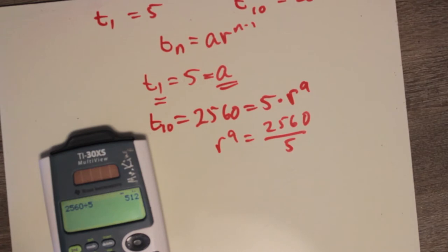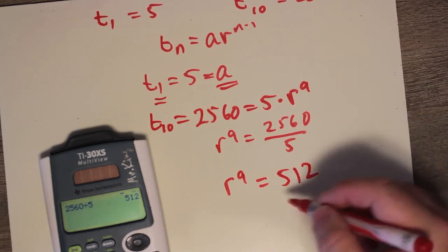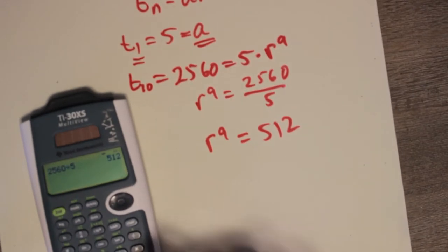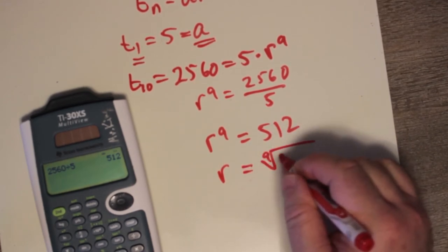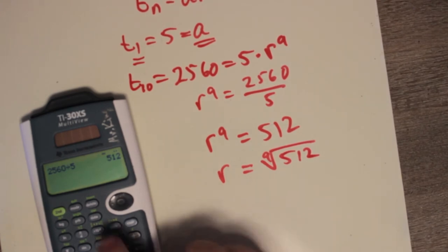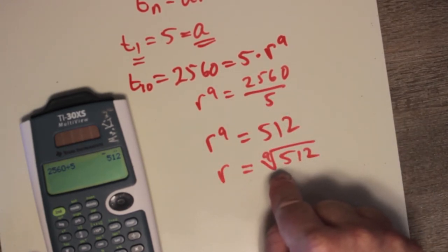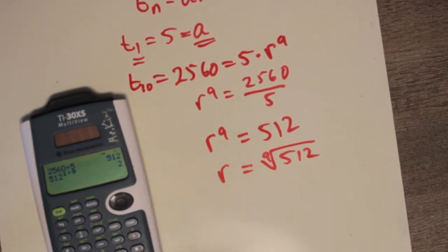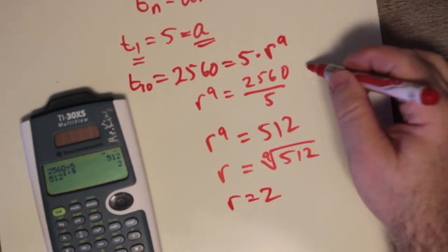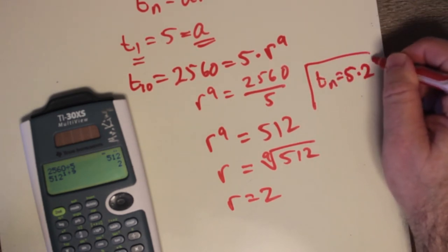2560 divided by 5 is 512. So r to the 9 equals 512, meaning r equals the 9th root of 512. We can calculate this as 512 raised to the power of 1 over 9, and the answer is 2. So the general term is 5 times 2 to the n minus 1.